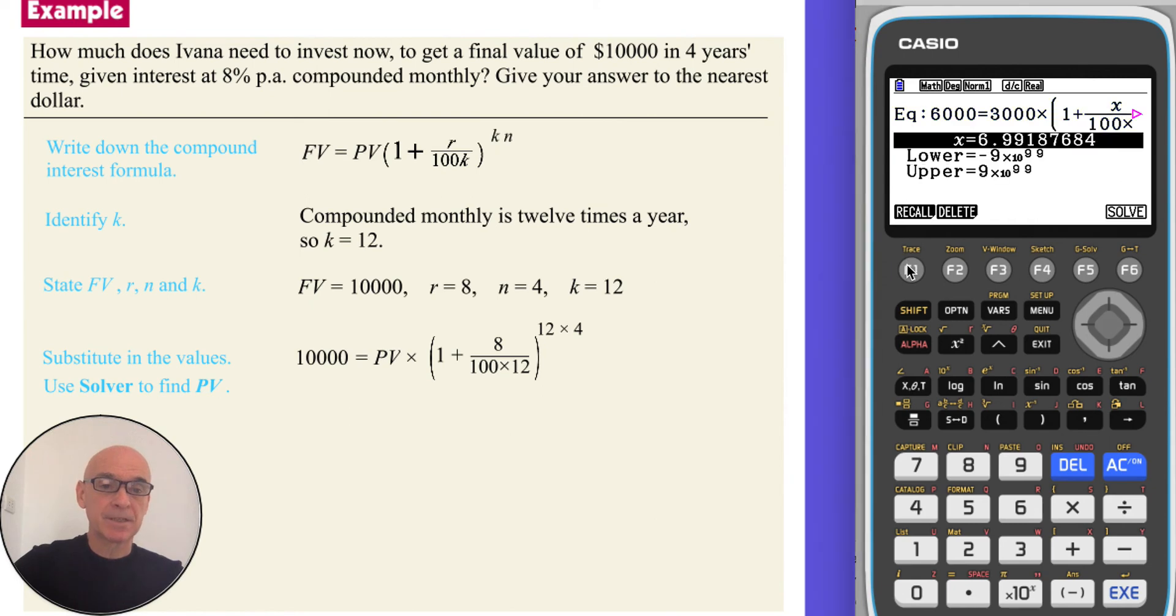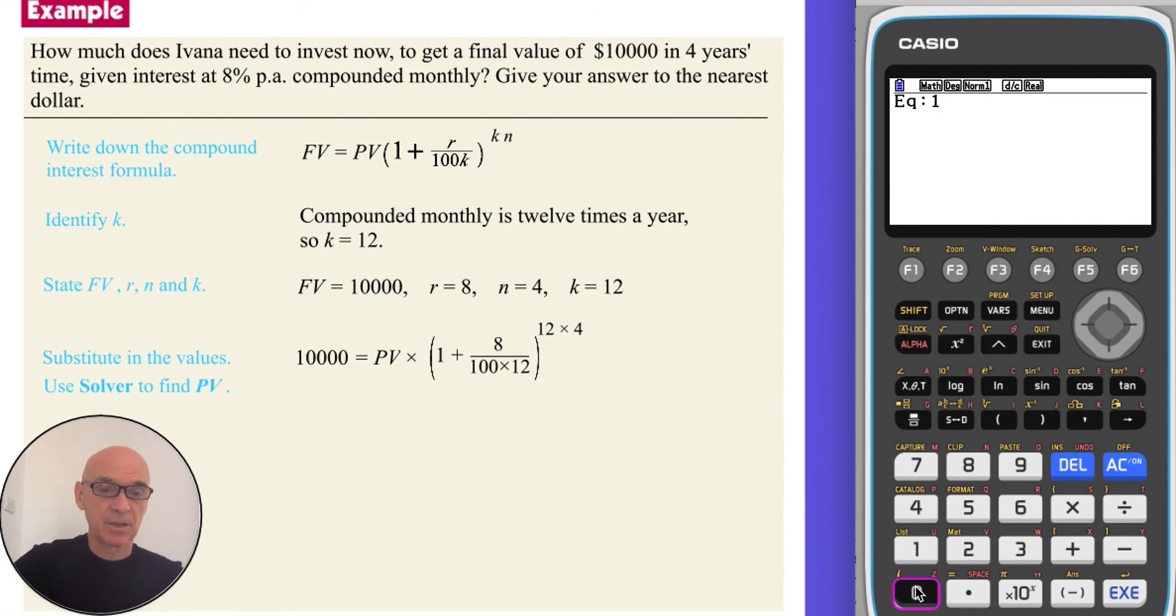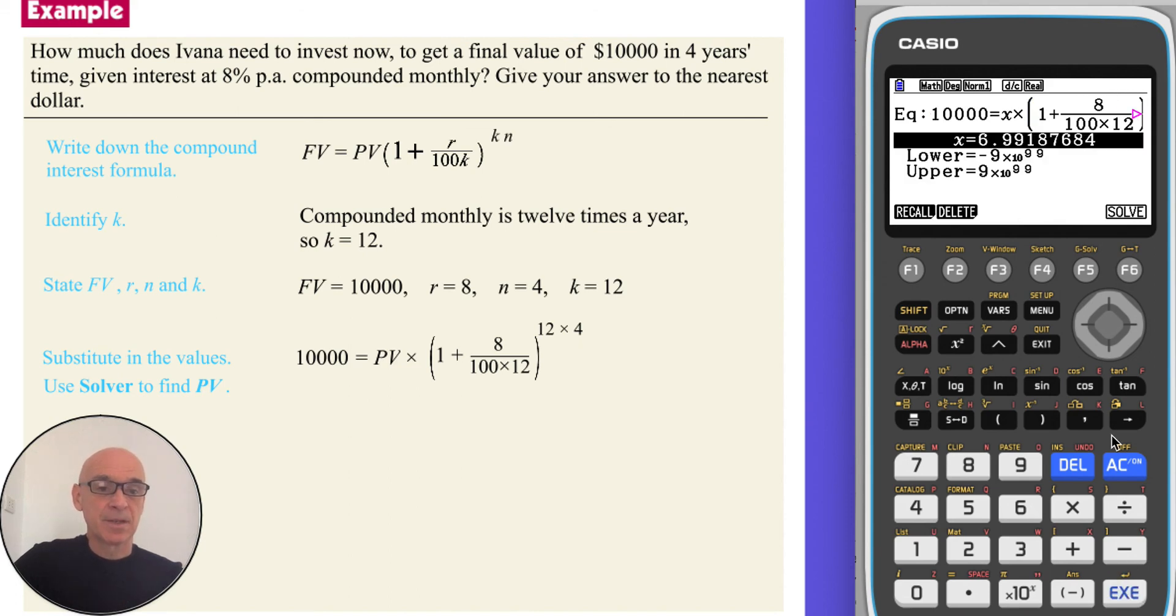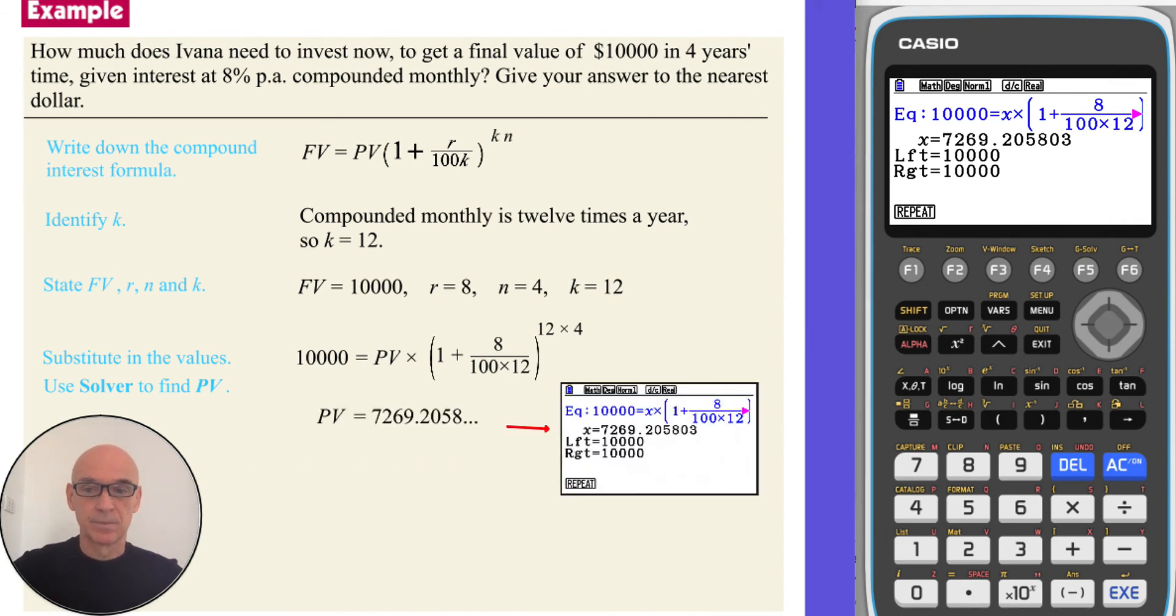So pressing F1 for a repeat calculation, F2 to delete the previous one, F1 to confirm that, we can now type in the equation. So starting with 10,000, shift to access equals, and for PV we use the variable X. Multiplied by 1 plus, and again using the fraction symbol, 8 for the interest rate, 100 multiplied by 12, right cursor to come up, and close the brackets to the power of 12 times 4. Press execute to enter the equation, and press F6 to solve the equation. Keeping the value shown. And we're asked to give the answer to the nearest dollar, so Ivana needs to invest $7,269 now.